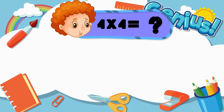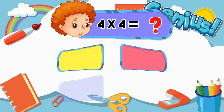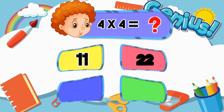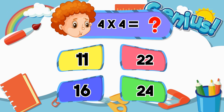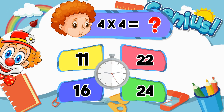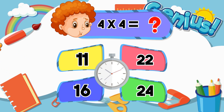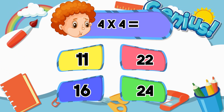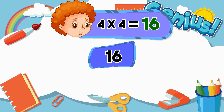What is 4 times 4? Options: 11, 22, 16, 24. Answer: 16.